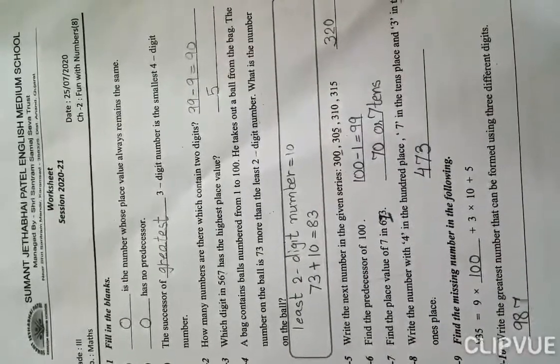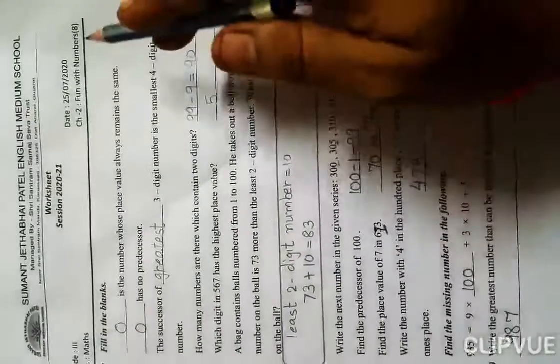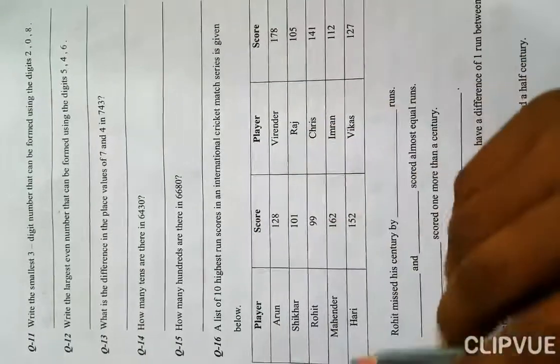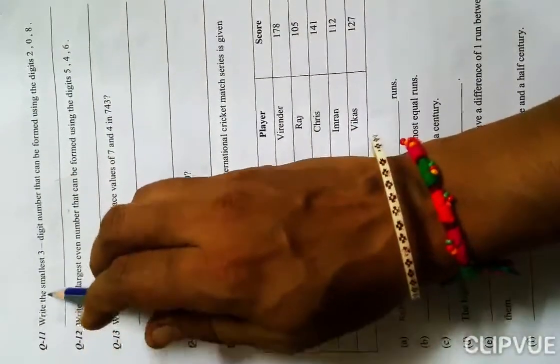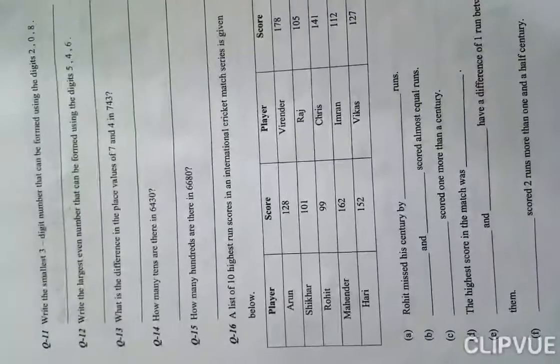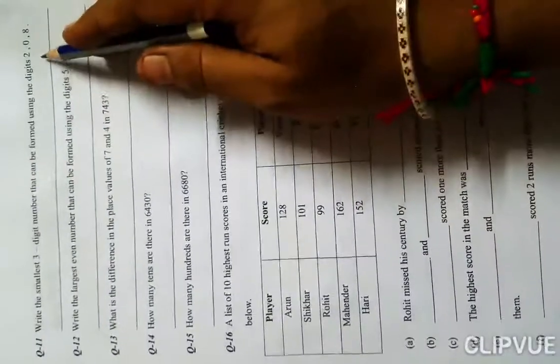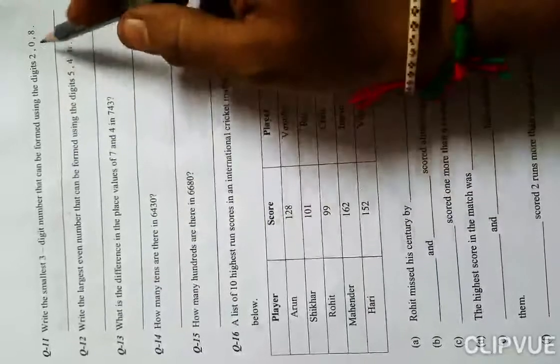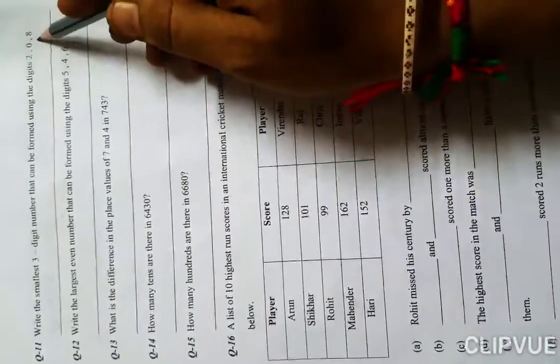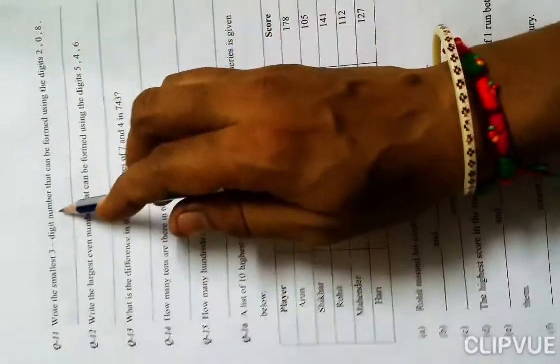Hello everyone, in this video I'll explain worksheet number 8, backside page. I already explained the front page. Question number one: write the smallest three-digit number that can be formed using the digits 2, 0, 8. From these digits we make the smallest three-digit number.